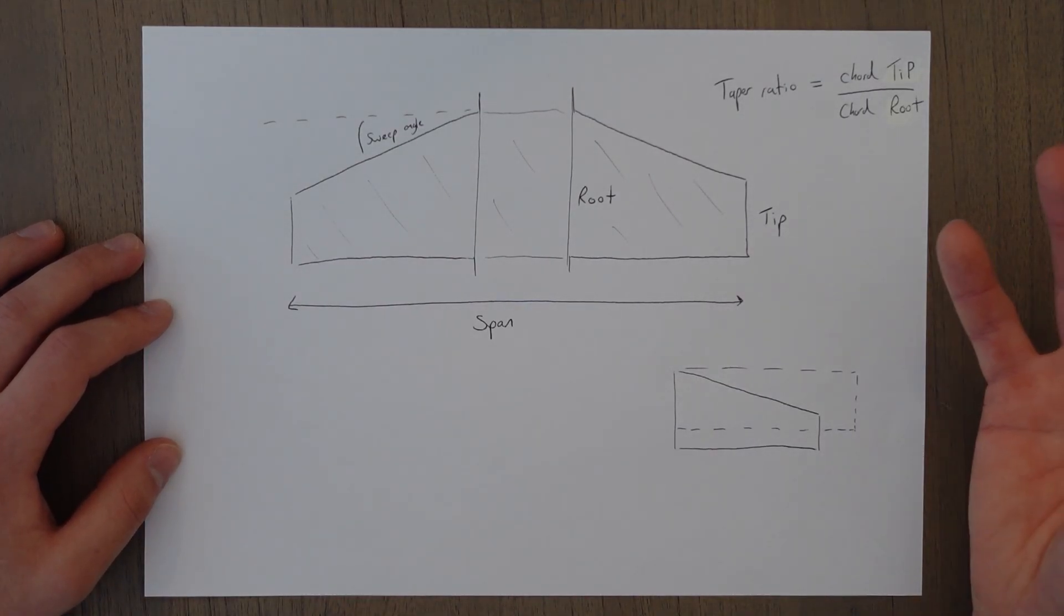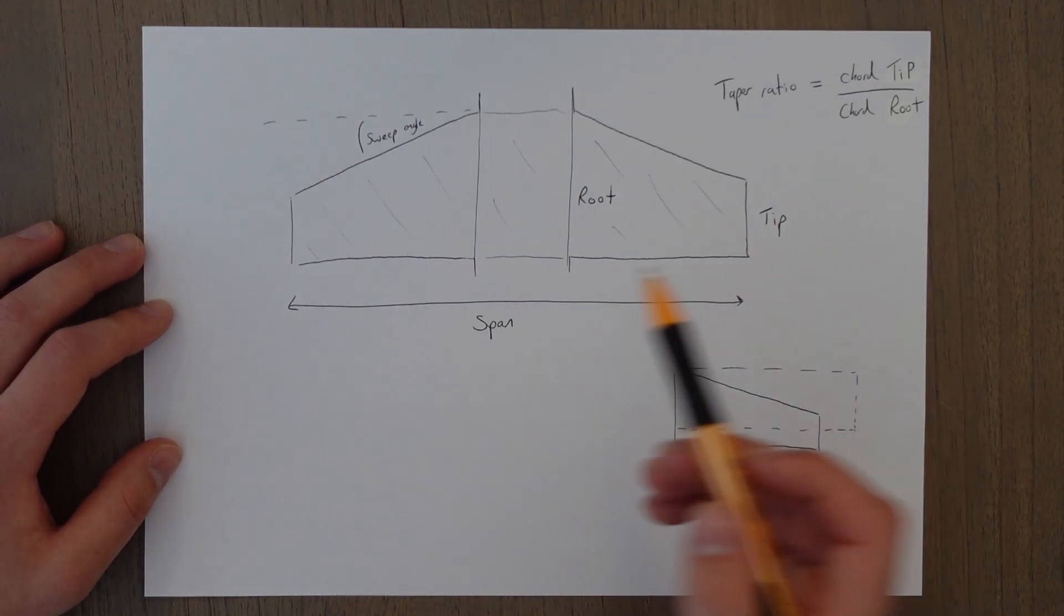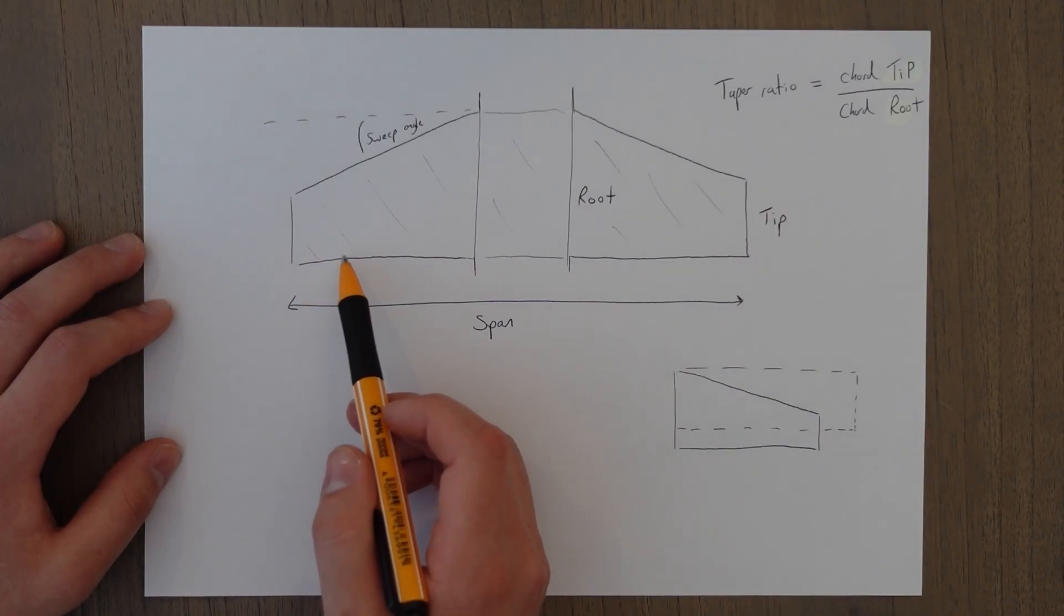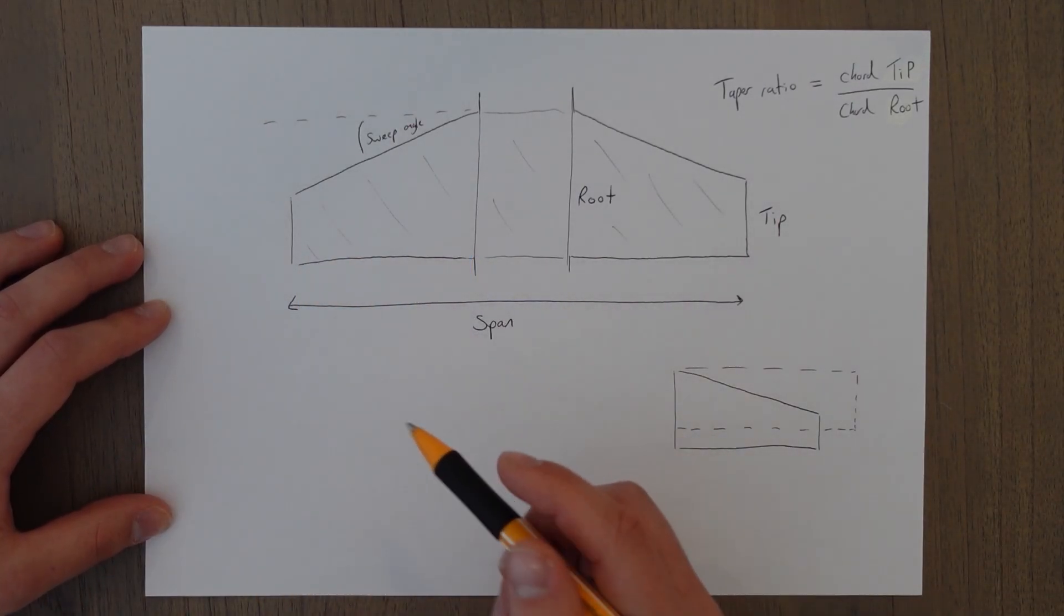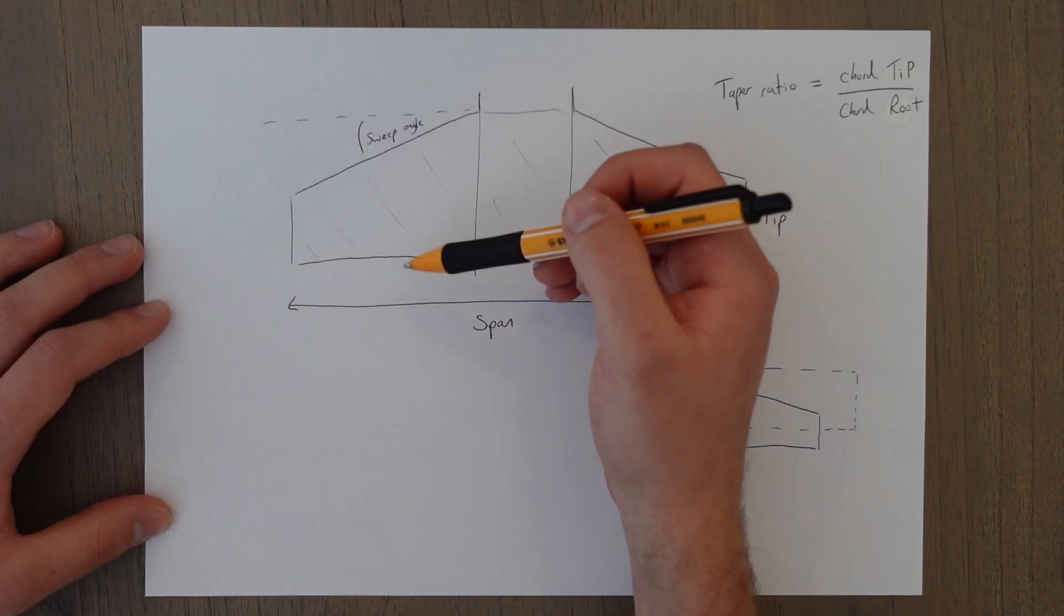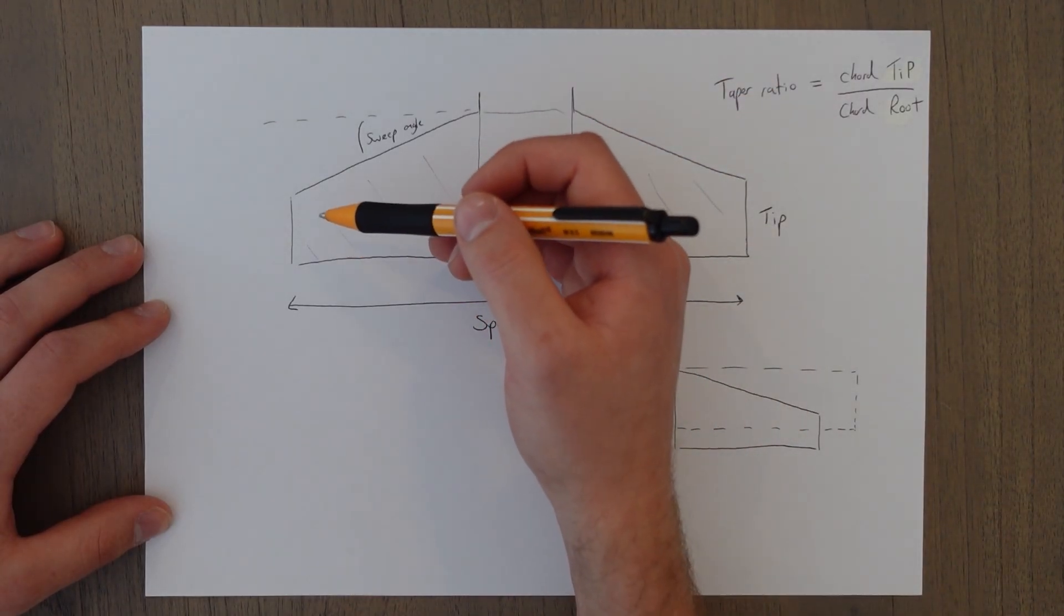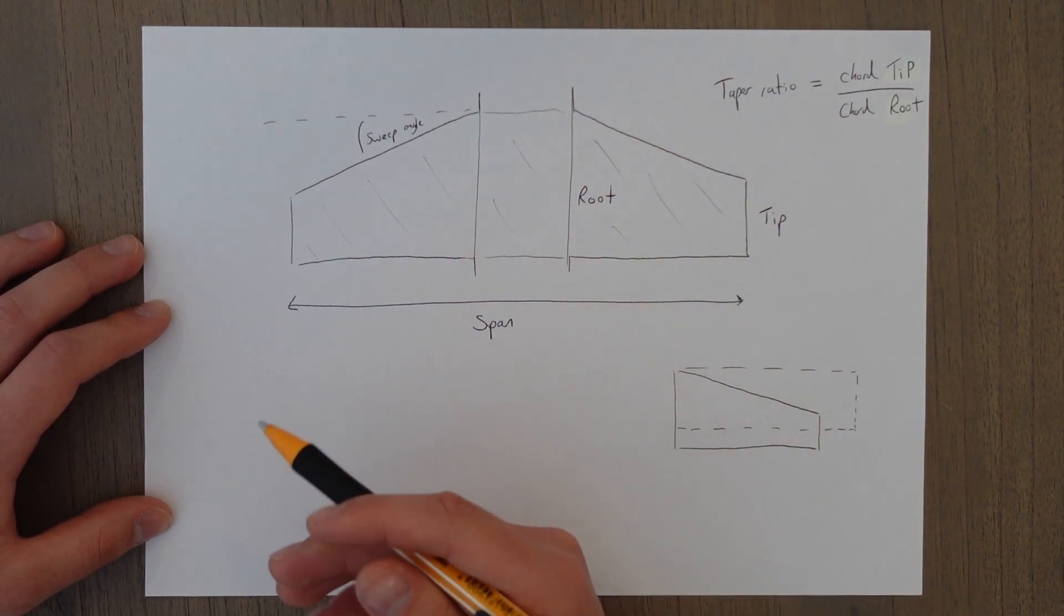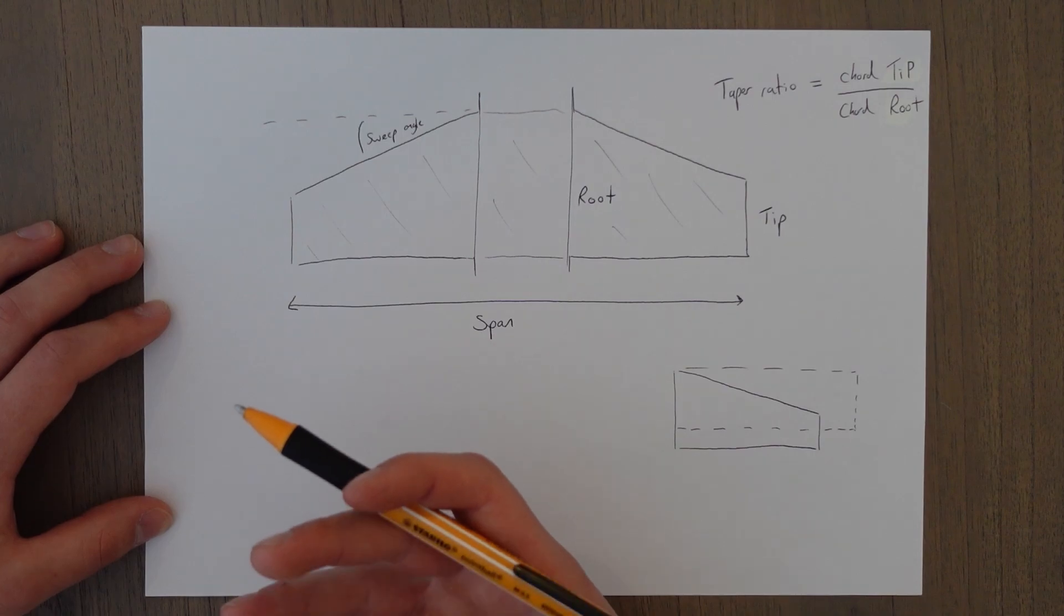The average chord is the average length of the chord along this whole length of the wing. To find the true average chord, we need to add up all the possible chords along the length of this wing and divide by however many you have. So to actually find out the average chord is quite tricky.